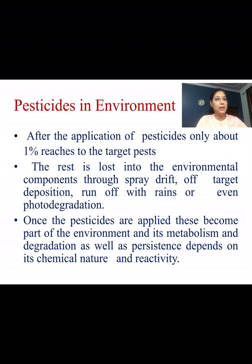After the application of pesticides, only about one percent reaches the target pest. The rest is lost into environmental components through spray drifts, off-target deposition, run-off with rains, or even photo degradation. Once pesticides are applied, they become part of the environment and their metabolism, degradation, and persistence depend on their chemical nature and reactivity.